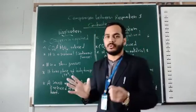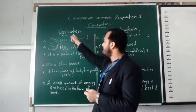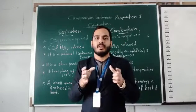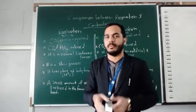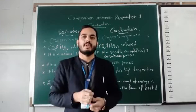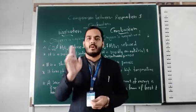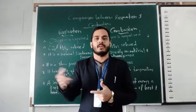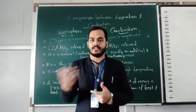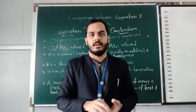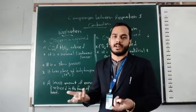Let's go through the chemical reactions first. Respiration means that oxygen reacts with glucose — the chemical formula of glucose is C6H12O6. The reaction between oxygen and glucose produces carbon dioxide, water, and energy. This is the chemical reaction of respiration. For combustion, carbon-based substances such as charcoal, coal, or fuel react with oxygen to form carbon dioxide, heat energy, and light energy.